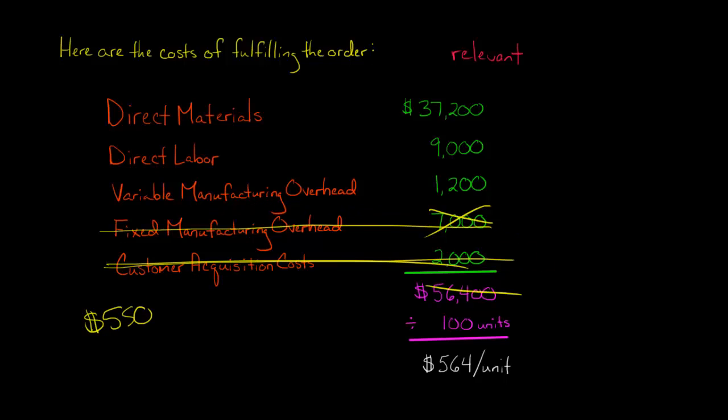So really, the cost of the job is not $56,400 or $564 a unit. It's really these three costs right here. So if we add those up, we get to $47,400. That's these three costs together. Those are really the costs. Those are the incremental costs of accepting this order. If we accept this order, we're going to incur $47,400 of costs. And we have 100 units that that's spread across. So we could say $474 a unit.